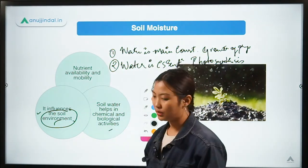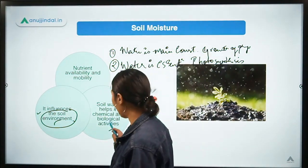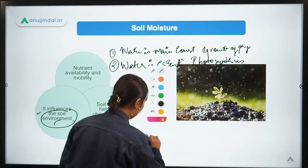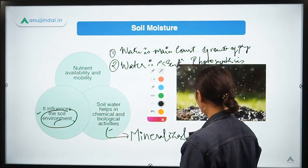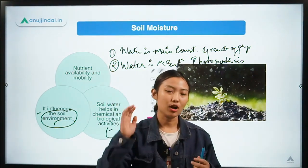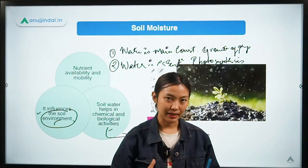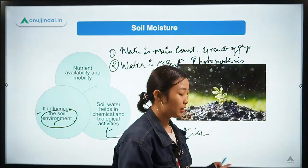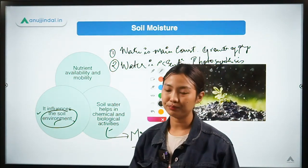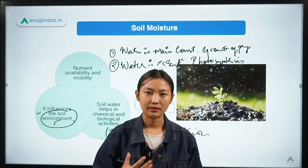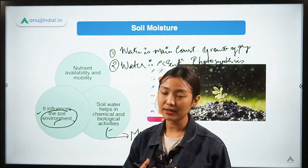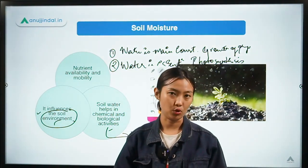Soil moisture also helps in chemical and biological activities. One important process is mineralization — the decomposition of chemical compounds not available to plants in the soil, breaking them down and making them available in a form that can be absorbed by these plants. This is the whole process of mineralization.